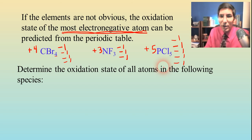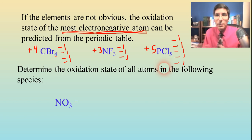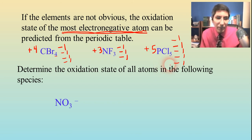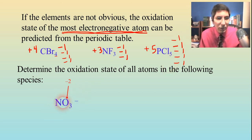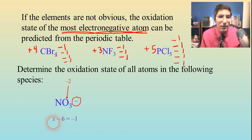Let's determine the oxidation state of all atoms in the following species. We'll start with the nitrate ion. We're going to use what we know to figure out what we don't know, and it's nice to work this as a little algebra problem. Oxygen is minus two. I don't know what nitrogen is, so I'll call that X. There are three oxygens at negative two apiece — that's negative six. The whole thing adds up to negative one, which is what the charge tells us. Solve for X and X is positive five.